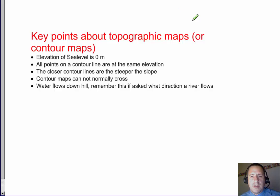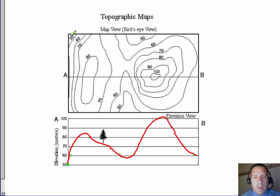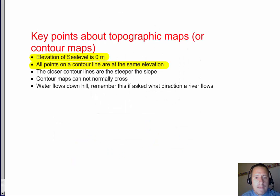Alright, let's finish up with some of the key points about topographic maps or contour maps. First is that elevation of sea level is 0 meters. Sea level is 0. If we said 100 feet below sea level or 100 meters above sea level, at sea level would of course be 0. All points on a contour line are at the same elevation. So we saw before lots of topographic maps. Everything on this line is at 60. The closer the contour lines get to one another, the steeper the slope. The further apart they get, the more gradual the slope.